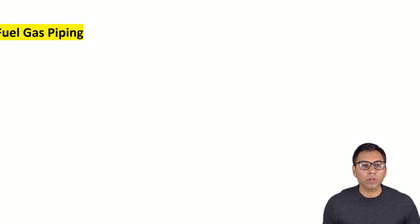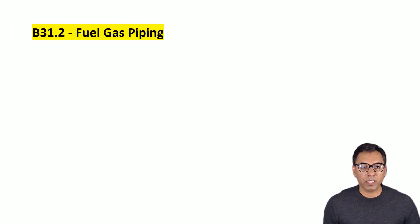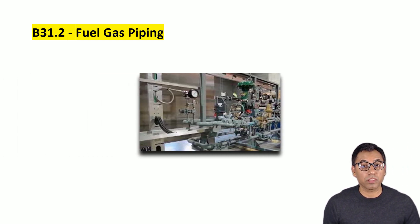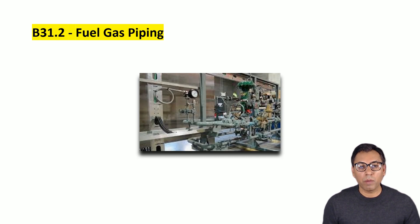The next ASME B31 chapter is B31.2, which is Fuel Gas Piping. This code covers the basic design, fabrication, installation and testing requirements of piping systems for fuel gases such as natural gas, manufactured gas, and liquefied petroleum gas or air mixtures above the upper combustible limit.